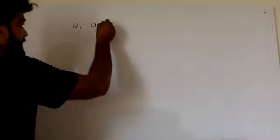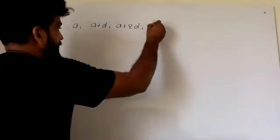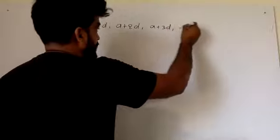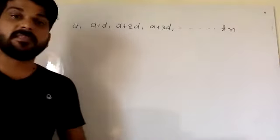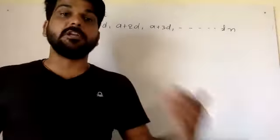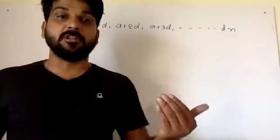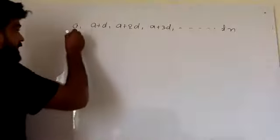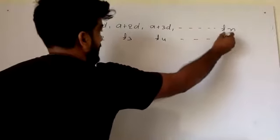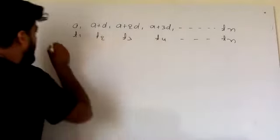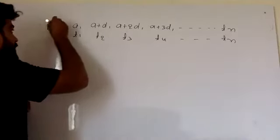So we are starting the AP. Take care of what AP is. Sometimes there is a sequence of A, A plus D, A plus 2D, A plus 3D. This sequence will continue. The first term is T1, the second term is T2, the third term is T3. Here is T1, T2, T3, T4, and TN. It is the general form for AP — Arithmetic Progression.